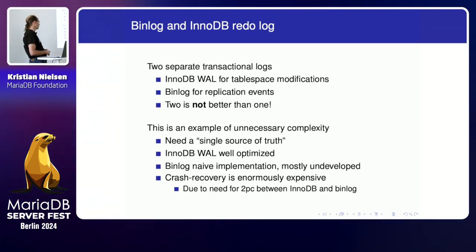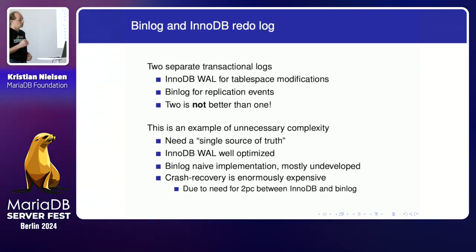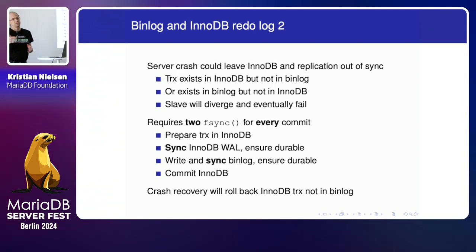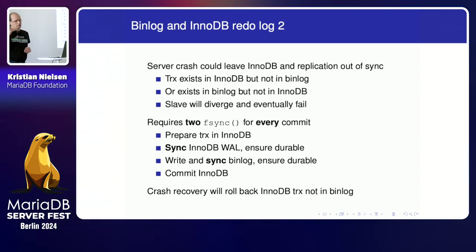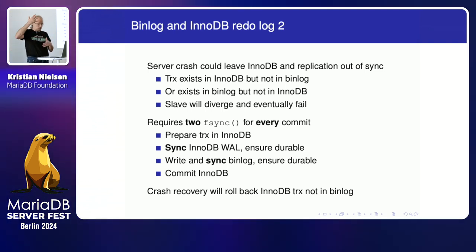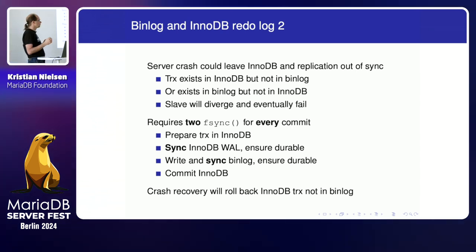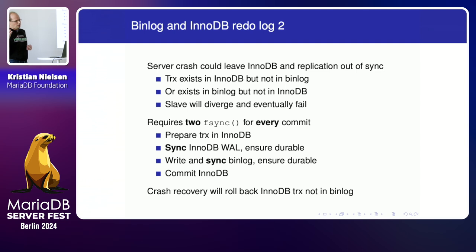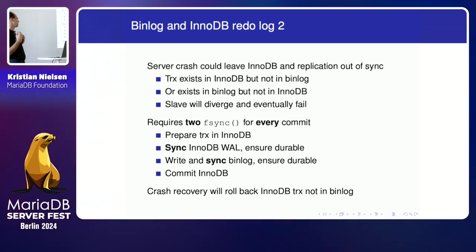Having a separate binlog gives a lot of complexity in the logic and is very costly in performance. The problem is that if the server crashes, we need to get back up in a consistent state. Consistent means we have to have the same transactions in the binlog that we have in the storage engine. If we don't have that guarantee, we could have transactions in the middle of commit when we crash — maybe the transaction was committed to InnoDB but it's missing from the binlog, or it's in the binlog but missing from InnoDB. The binlog is what goes to the slave, but InnoDB is what we have on the master — and then we get a difference between slave and master. It's not even visible, and eventually the system will fail a day later for unknown reasons.